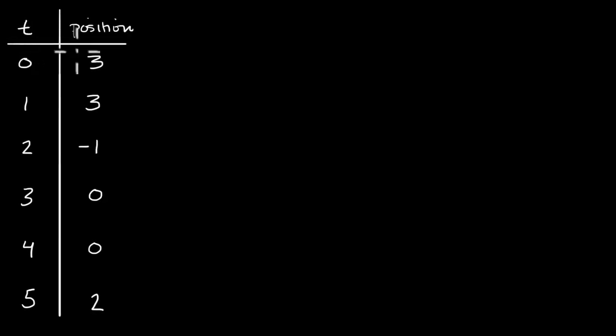So one of the more basic ways is through a table. For example, right over here, in the left column I have time, maybe it's in seconds, and in the right column I have position. This could be in some units, let's say it's in meters. So at time zero we're at three. After one second we are still at three. After two seconds we're at negative one. Then after three seconds we're at zero. After four seconds we're at zero, still at zero. After five seconds we are at two, maybe two meters.